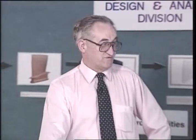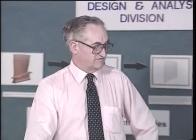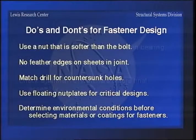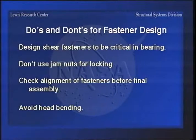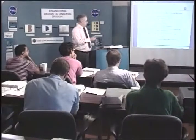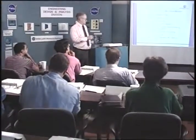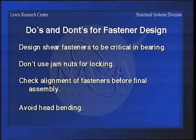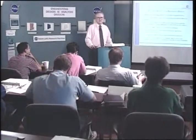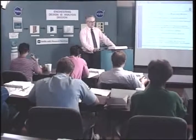Determine the environmental conditions before selecting materials or coatings for fasteners, because you want to make sure that you're covered with your temperature range. Design shear fasteners to be critical in bearing - that means the fastener is stronger in shear than the material, so you can elongate the hole in the material to allow your fasteners to pick up the load without failing the fastener. Don't use jam nuts for locking. Check alignment of fasteners before final assembly, and avoid head bending - the SAE handbook says don't go more than plus or minus two degrees on misalignment on a fastener head to avoid trouble with bending.